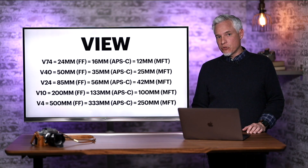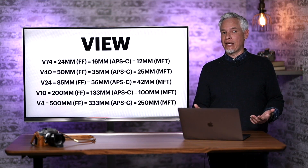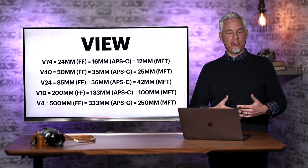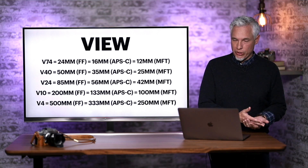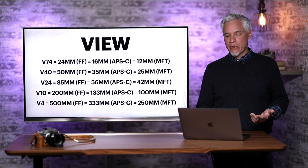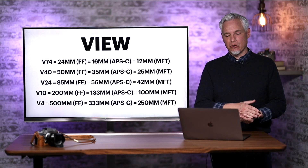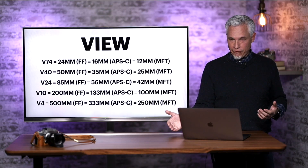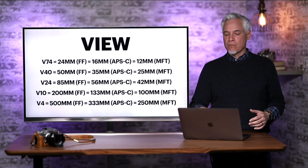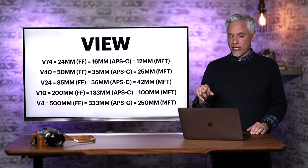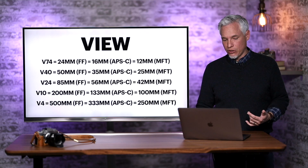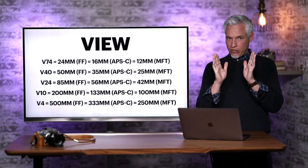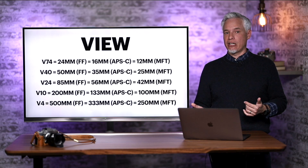Focal length is extremely confusing because we have to apply the crop factor to understand the angle of view. Most smartphones and many point-and-shoot cameras already express angle of view in degrees. For example, 24 millimeters on a full-frame camera is a 74-degree angle of view — the same angle of view you get at 16mm or 12mm on other formats. View simply uses the letter V followed by the number of degrees. So V74 indicates a 74-degree angle of view, V40 indicates a normal 50mm angle of view, and V24 indicates a narrower angle of view similar to that of an 85mm lens on a full-frame camera.